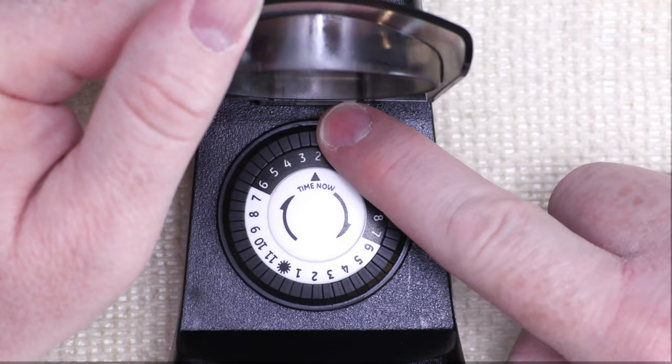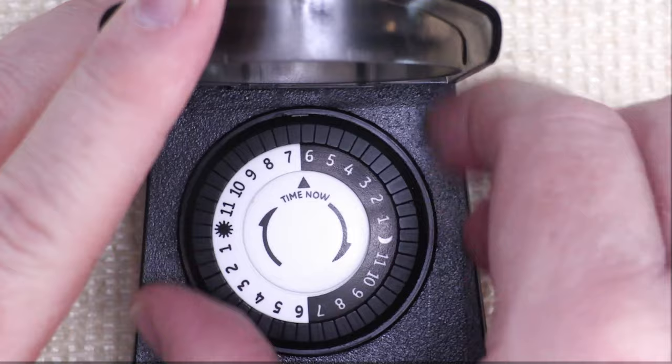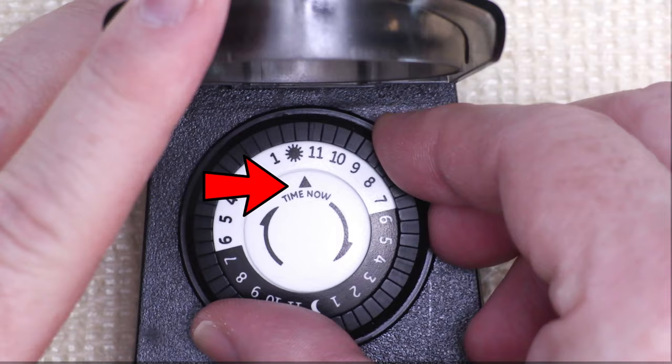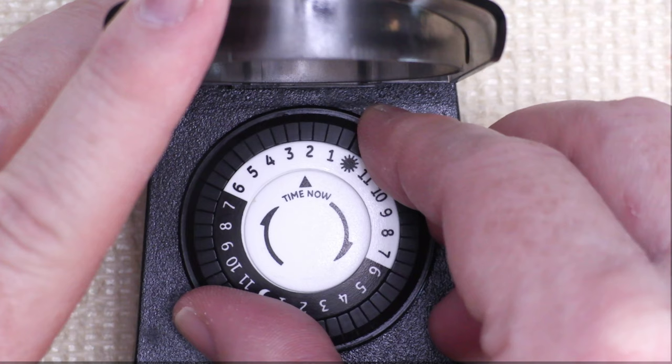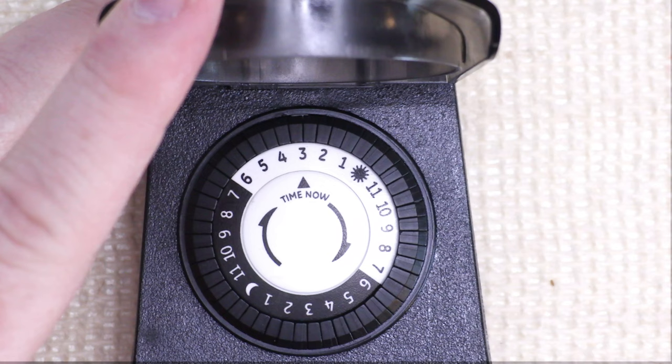Now the last thing we'll need to do is set the time of day that it is right now. You'll see the arrow there. It says time now. What time is it right now? Well, right now, for me, it's about 3 o'clock. So you turn the entire dial until you get to 3. And when you get to 3, that is the current time.